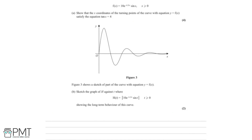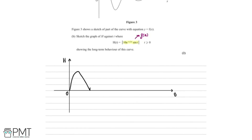Now part b: we need to sketch the graph of h against t, where h(t) equals the modulus of 10e^(−0.25t) sin(t), showing the long-term behaviour — this is for two marks. The first thing to notice is that inside the modulus is actually f(x). Figure 3 shows a sketch of part of the curve y = f(x). The difference with h(t) is that it's the modulus of f(x), so all the negative parts are going to flip over and be positive.